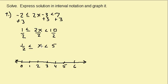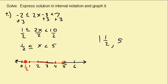Now we want to graph our solution. I've got 0, 1, 2, 3, 4, 5, 6 on the number line. We have x greater than or equal to one-half, so one-half is about right here — that's a closed circle because it's greater than or equal to. Everything larger than one-half but less than five, and on the five we have an open circle because it's not equal to. In interval notation, that's from one-half to five with a bracket on the one-half and a parenthesis on the five.